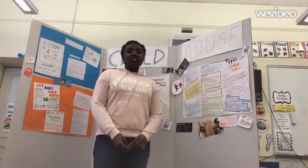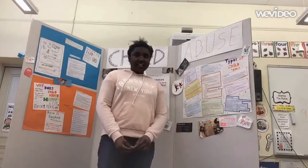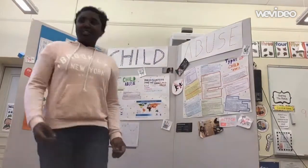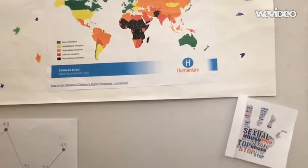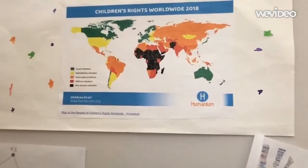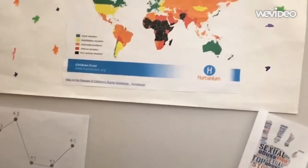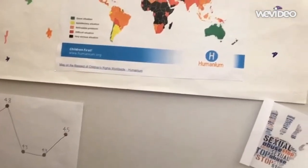Which country has the most child abuse? The countries with the highest rates are Chad, Somalia, Afghanistan, the Democratic Republic of Congo, and Niger. Here is a map of which countries have child abuse. Green means it's a good situation, and black means it's a very serious situation. Comment down below which country you're in.